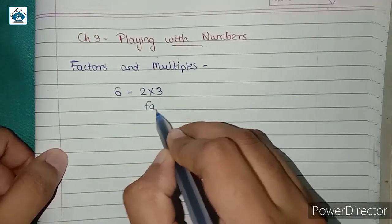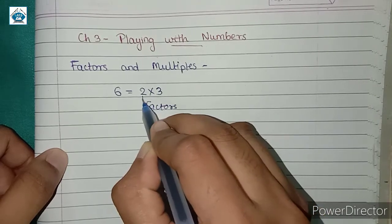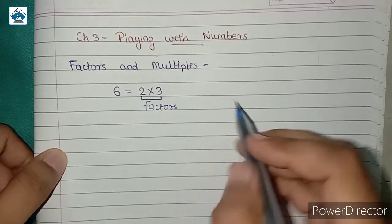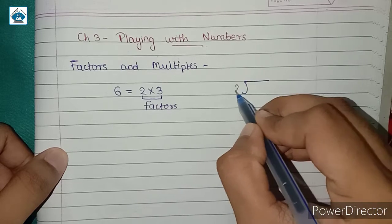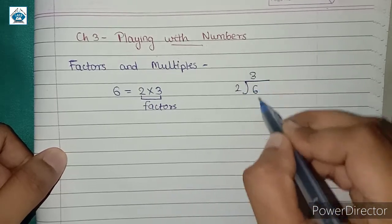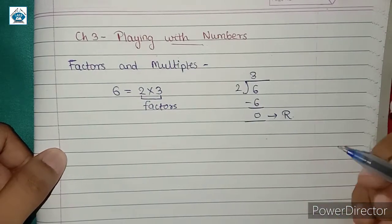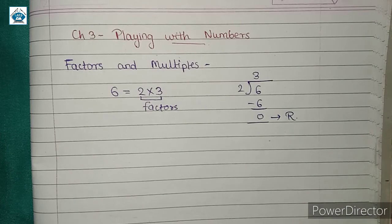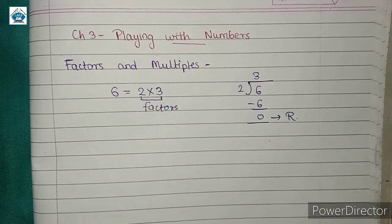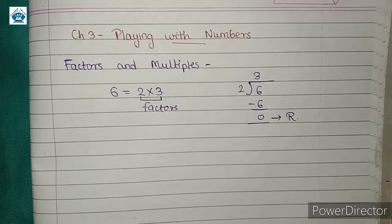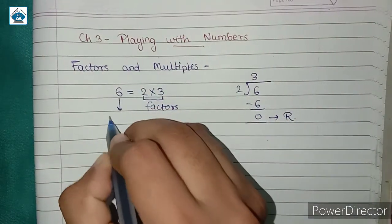So 2 and 3 are called the factors of 6. When we divide 6 by 2, we get remainder 0, meaning 6 is completely divisible by 2. Similarly, when we divide 6 by 3, we also get remainder 0. So 2 and 3 are the exact divisors of 6, and therefore they are called the factors of 6.